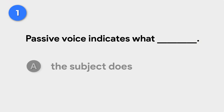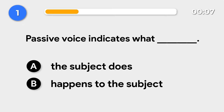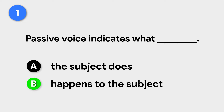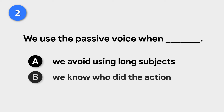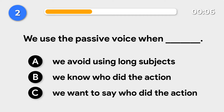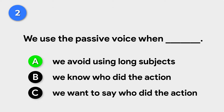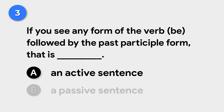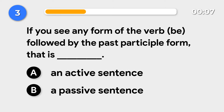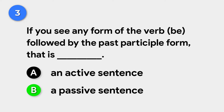Let's get started. Passive voice indicates what happens to the subject. We use the passive voice when we avoid using long subjects. If you see any form of the verb 'be' followed by the past participle form, that is a passive sentence.